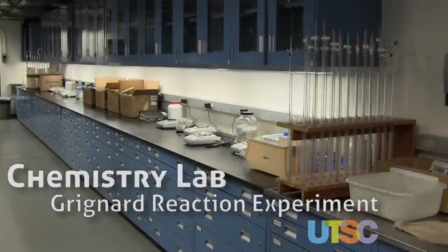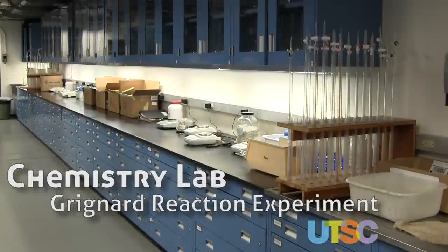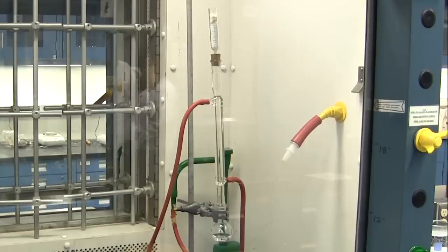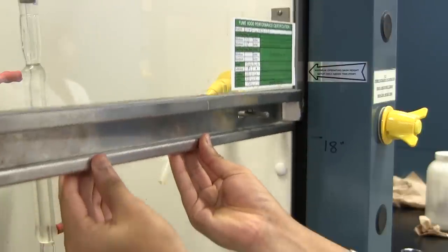The Grignard reaction is used to prepare the Grignard reagent which can then be used to make new carbon-carbon bonds. In this video we will be discussing how you can prepare the Grignard reagent and the various techniques involved.